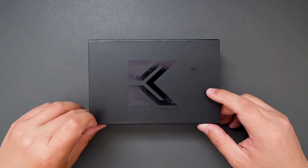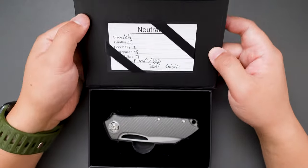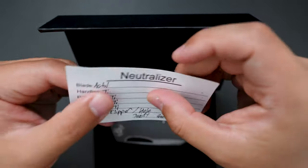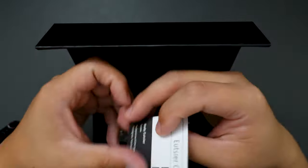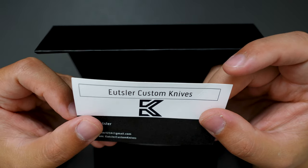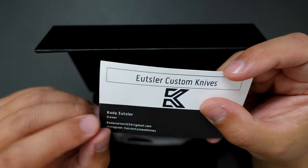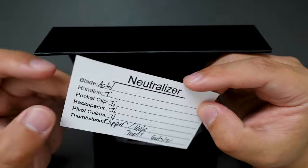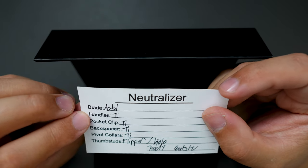Let me open this box and see what's inside here. As you can see, we got a COA card here. It says neutralizer. So it's Euster Customize. The maker is Cody Euster. Here is their information, and the model name is neutralizer. Such a cool name.